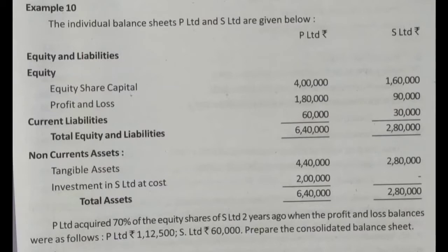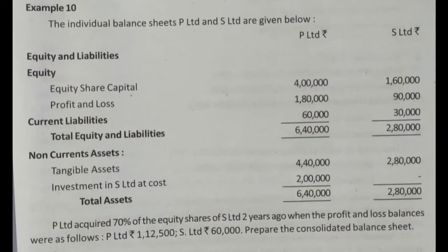The balance sheet relates to equity. The equity share capital and profit and loss levels are shown. The profit and loss of subsidiary S Limited shows a profit of 90,000. This is the profit figure we will work with. The asset side also reflects this cost of profit at 90,000.